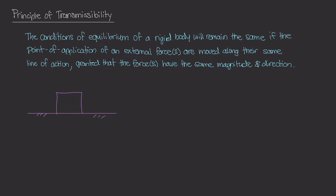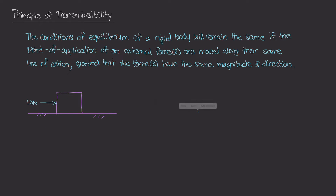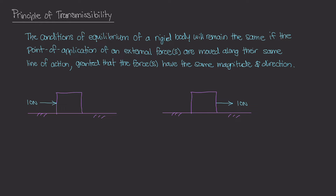Let's say I applied a 10 newton force on the left side of the box — you can see that the box will be inclined to move to the right. The principle of transmissibility states that if I copied this scenario and instead applied the 10 newtons to the right side of the box, the conditions of equilibrium stay the same — whether applied on the left, the right, or anywhere along this line of action.